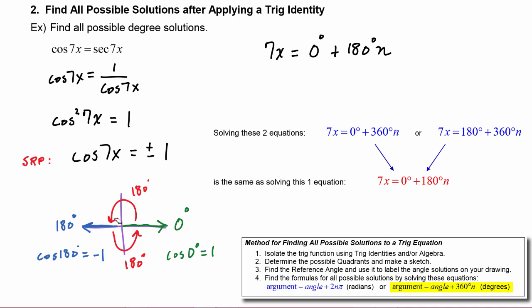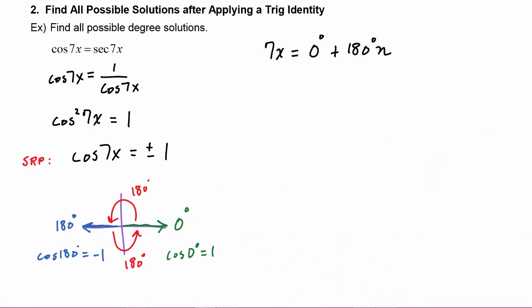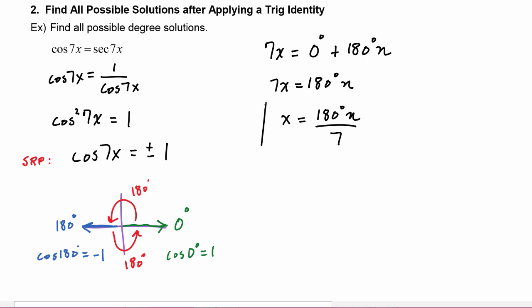You could also solve two separate equations, setting 7x equal to zero plus 360n degrees, or instead combine them into one equation: 7x equals zero plus 180n degrees, which simplifies to 7x equals 180n degrees. Dividing both sides by seven, we get x equals 180n degrees over seven, and this formula finds all the infinitely many solutions.